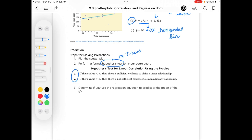So, if the p-value is less than alpha, there is sufficient evidence to claim that there is a linear relationship. However, if our p-value is greater than or equal to our alpha value, there is not sufficient evidence, so we can't say that there is a linear relationship.